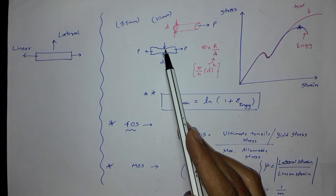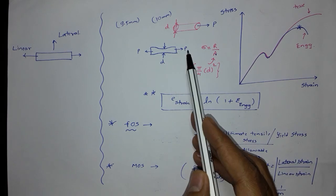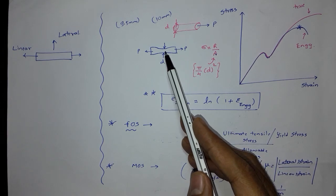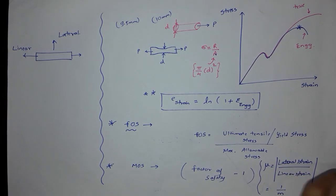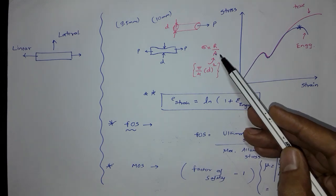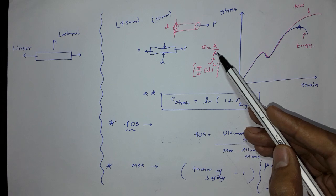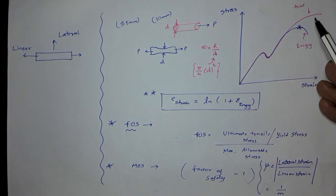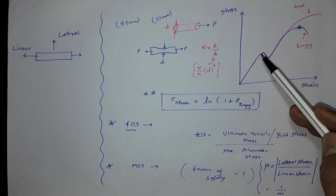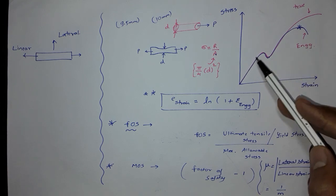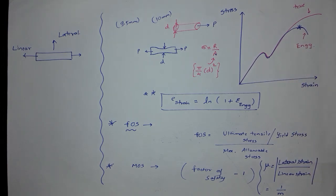If you take a rod and apply a load, there will be deformation. The diameter will be reduced and the area will be changed. If I consider the changed area value for the calculation of stress, then I will draw the true graph. The blue line will indicate the engineering graph and the pink color is the true graph.